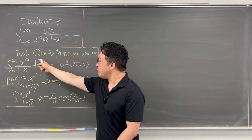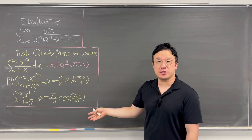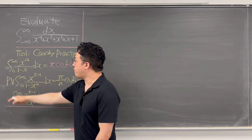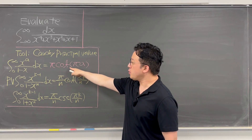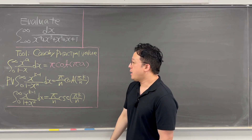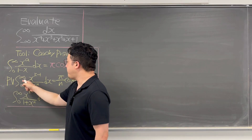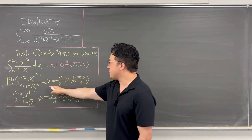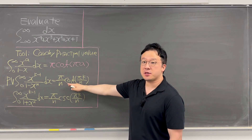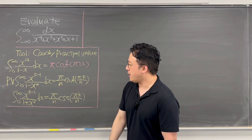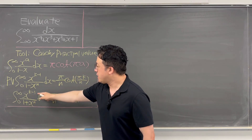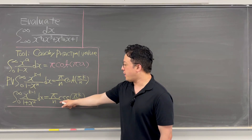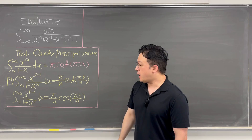For this integral, the tool is the Cauchy principal value. I've listed up some formulas to use. For example, the Cauchy principal value of the integral from 0 to infinity of x to the power of a over 1 minus x dx is pi times cotangent of pi times a. Also, the Cauchy principal value of the integral from 0 to infinity of x to the power of k minus 1 over 1 minus x to the power of n dx is pi over n times cotangent of pi k over n. And the integral from 0 to infinity of x to the power of k minus 1 over 1 plus x to the power of n dx is pi over n times cosecant of pi k over n.